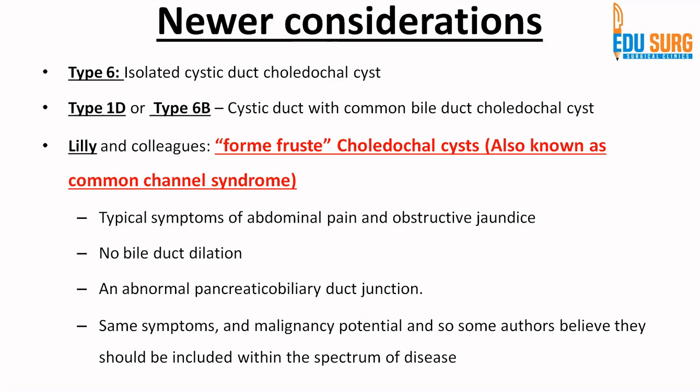Another type is 'forme fruste' or common channel syndrome, identified by Lily and colleagues. These patients have abnormal pancreatic biliary duct junction (APBDJ) — a long common channel. They do not have any biliary dilatation, but they have APBDJ and the same symptoms and malignancy potential as choledocal cysts. They can also present with abdominal pain and obstructive jaundice. This has been described as type 7 or forme fruste choledocal cysts.